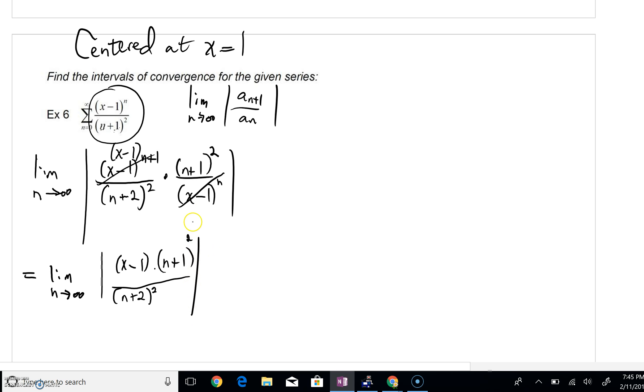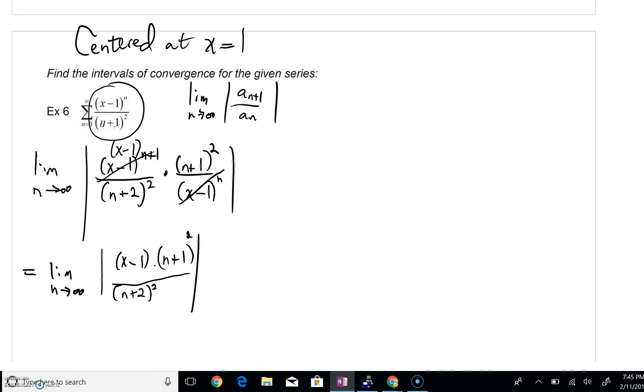Well, hopefully you can see what's happening here. As n gets sufficiently large, n plus one squared all over n plus two squared, n behavior guarantees that that's really going towards one. And that's going to leave us simply with the absolute value of x minus one. The ratio test says that we will get convergence when that limit is less than one.